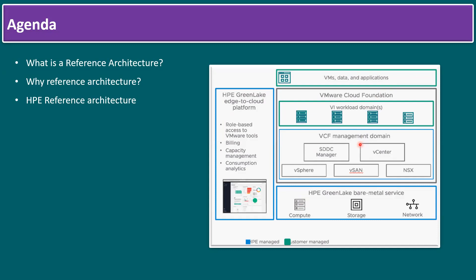If the customer requires additional capabilities, we also provide HPE GreenLake Edge-to-Cloud Platform, specifically for role-based access to VMware tools, billing purposes, and capacity management — including monthly billing using consumption analytics, similar to the cloud pay-as-you-go model. In the diagram, blue color indicates HPE managed services and green color indicates customer-managed areas such as workload domain VMs, data, and applications.